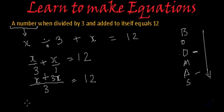So if we solve it further, what will we get? x plus 3x is 4x by 3 is equal to 12.